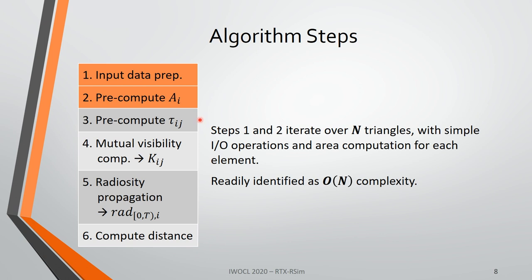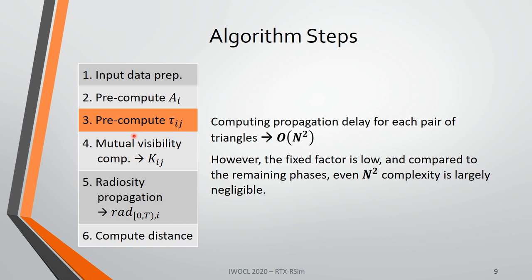These are the six steps outlined previously. The first two — input data preparation and pre-computation of the area of each triangle — both iterate over n triangles. We can readily identify these steps have O(n) complexity, since we are doing one thing for each triangle. Next is the pre-computation of tau_ij, the propagation delay. We need to compute the propagation delay between every pair of triangles, giving us O(n²) complexity. However, the fixed factor is very low — it's a very simple computation — and we will see that even this n² complexity is largely negligible.